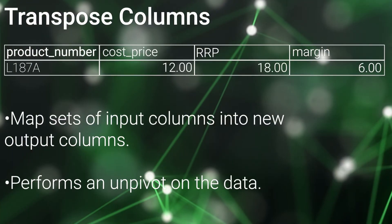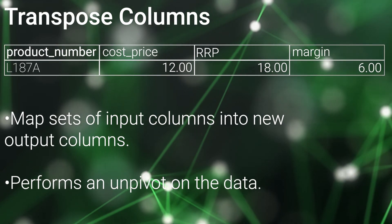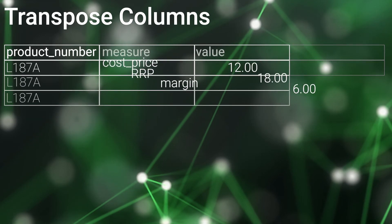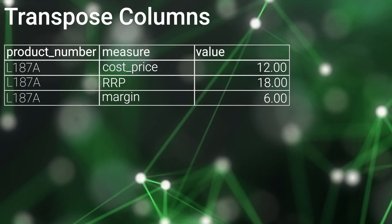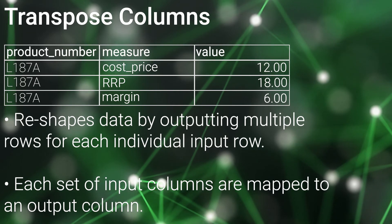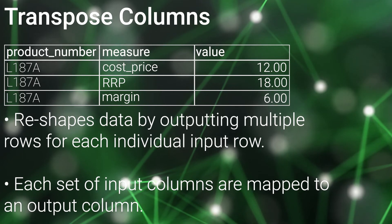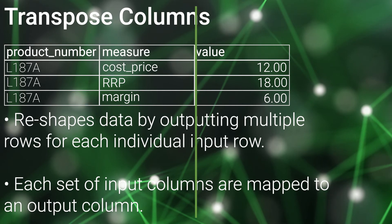Next, we'll use the Transpose Columns component to map sets of input columns into new output columns, effectively performing an un-pivot on the data. This component reshapes data by outputting multiple rows for each individual input row, with each set of input columns mapped to an output column, and output rows labelled to show which column the value originated from.